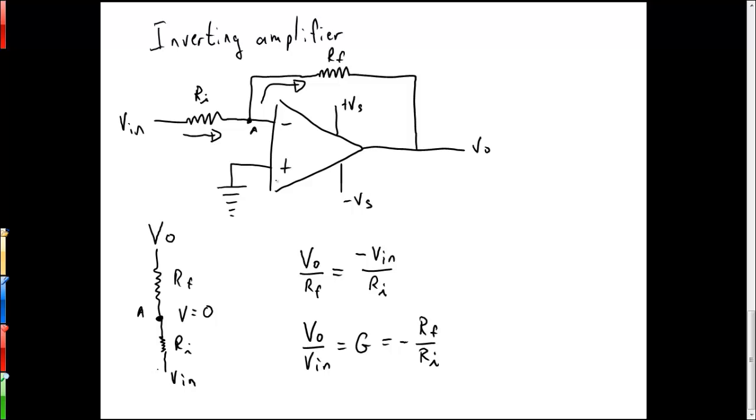the non-inverting terminal and the inverting terminal, VO has to drop to some negative value, and that's where the negative part in the gain comes in.